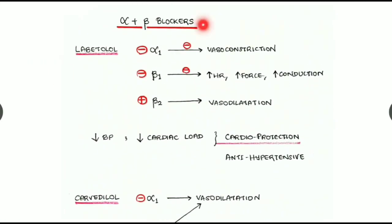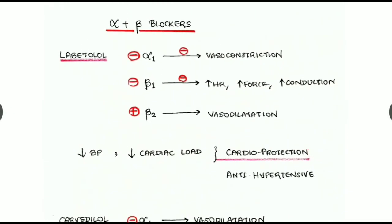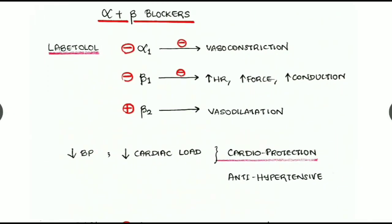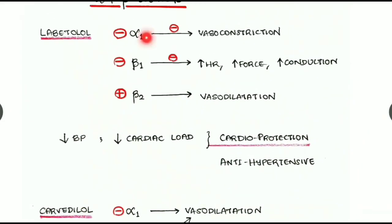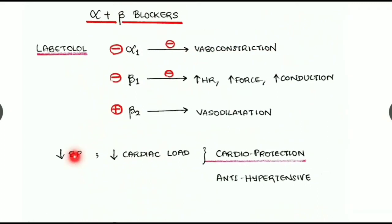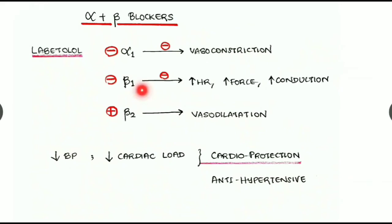Some drugs have both alpha and beta blocking activity. Examples are labetalol and carvedilol. Labetalol inhibits alpha-1 receptors, inhibits beta-1 receptors, and is a weak agonist at beta-2 receptors. Due to alpha-1 blockade it inhibits vasoconstriction, reducing blood pressure. Beta-1 blockade inhibits increasing heart rate, cardiac force, and conduction velocity, thereby decreasing cardiac workload.